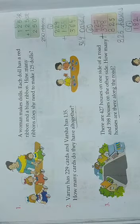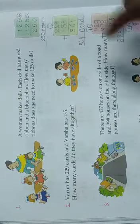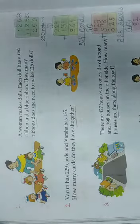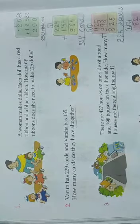9 plus 5. 5 fingers - after 9, 10, 11, 12, 13, 14. 4 and 1. So 2 plus 1, 3. 3 plus 3 again, 6. 2 plus 1, 3. Overall 364 cards. 364 cards.